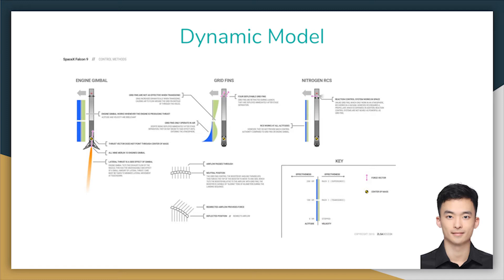The second is the relative angle of the thrust vector with respect to the vertical X, which is described as theta. With these two control inputs, the thrust vector doesn't necessarily point through the center of mass and thus provides some mobility through the horizontal direction. In our second model, we have a rocket equipped with both thrust vector and grid fins. We have two grid fins deployable because it's two dimensions.